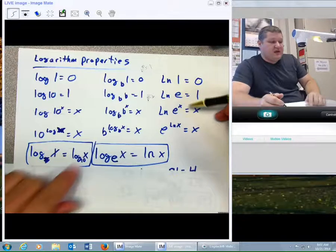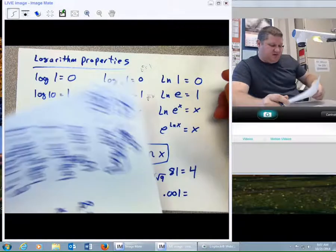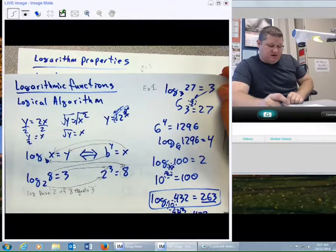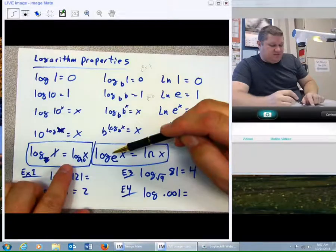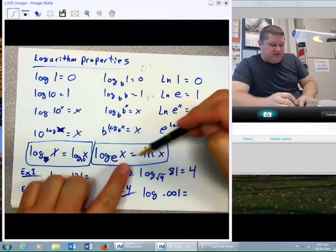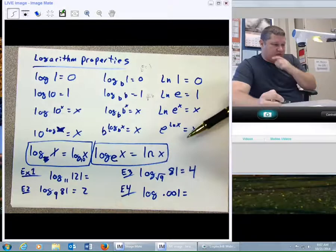However, if I have log base e, remember that e, that 2.7, 1828, 1828? That is going to be log base e of x. We call it the ln of x, the natural log of x.